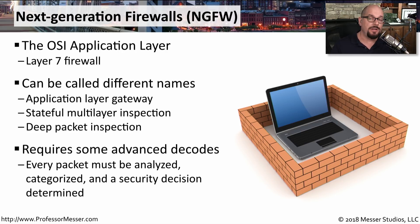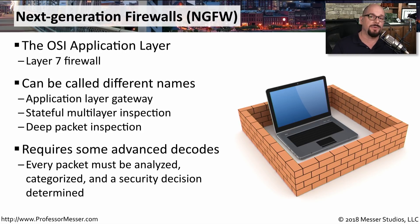A next generation firewall looks at every bit and byte going through the network, examining every frame and making security decisions based on what's within all of the data of that frame. So it may be able to allow communication to Facebook, allow communication to Twitter, but not allow someone to post to Facebook or post to Twitter — because these firewalls can really understand all of the applications in use, and in some cases, different functions of those applications.